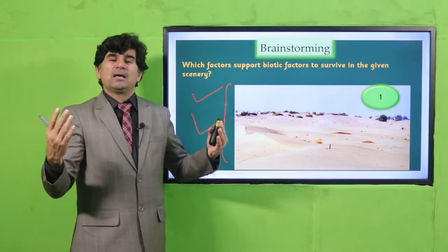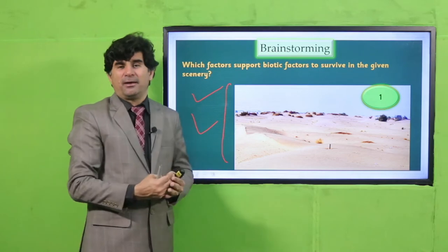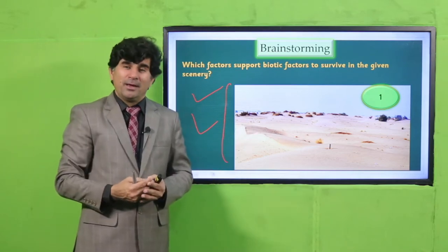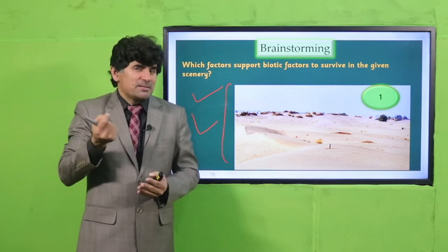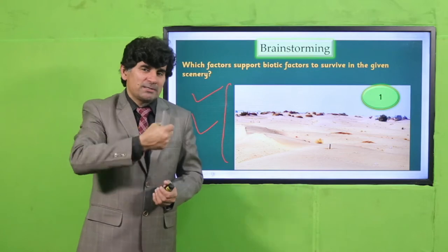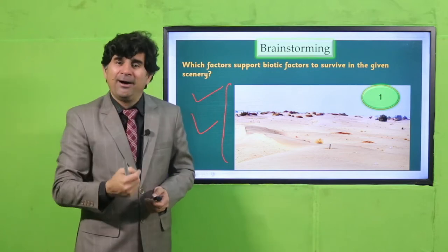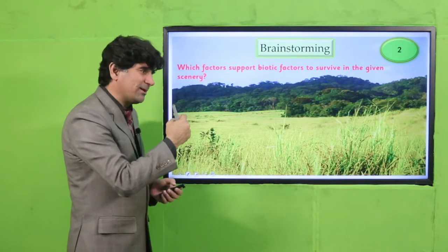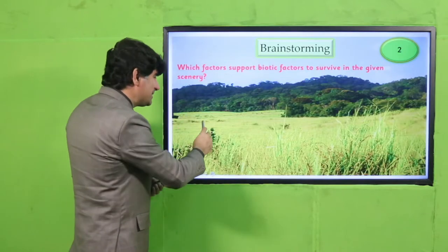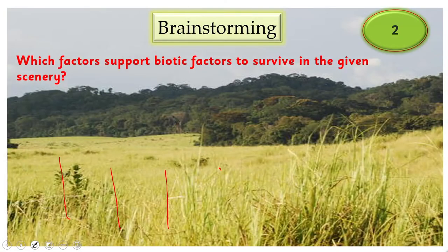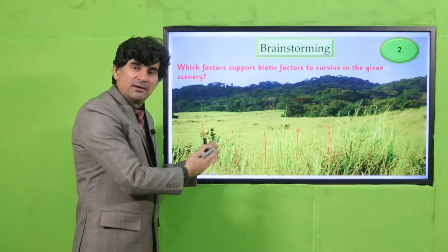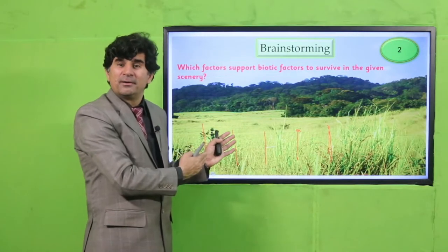For example, this is a sandy area — Rajasthan. Do you know some animals that are in Rajasthan? Come to the next one and see the beautiful fields. Do you know animals which are living here, which want to live here?